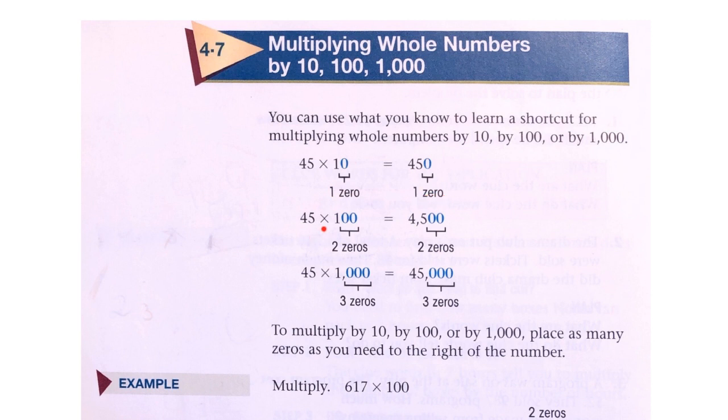45 times 100: 100 has two zeros, so that would be equal to 45 with two zeros.